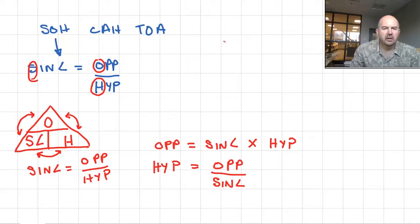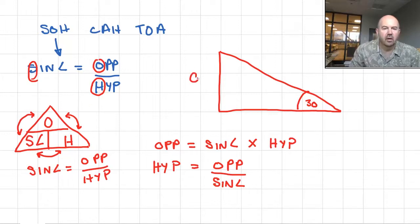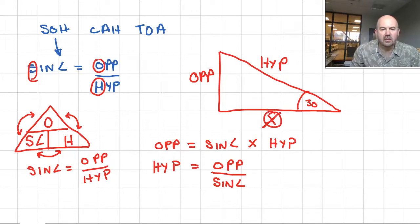For example, if I have a right angle triangle and I know the angle — say 30 degrees — in this formula I would know or be looking for either the opposite length or the hypotenuse length. When it comes to the sine function, it never includes the length of the side adjacent to the angle.